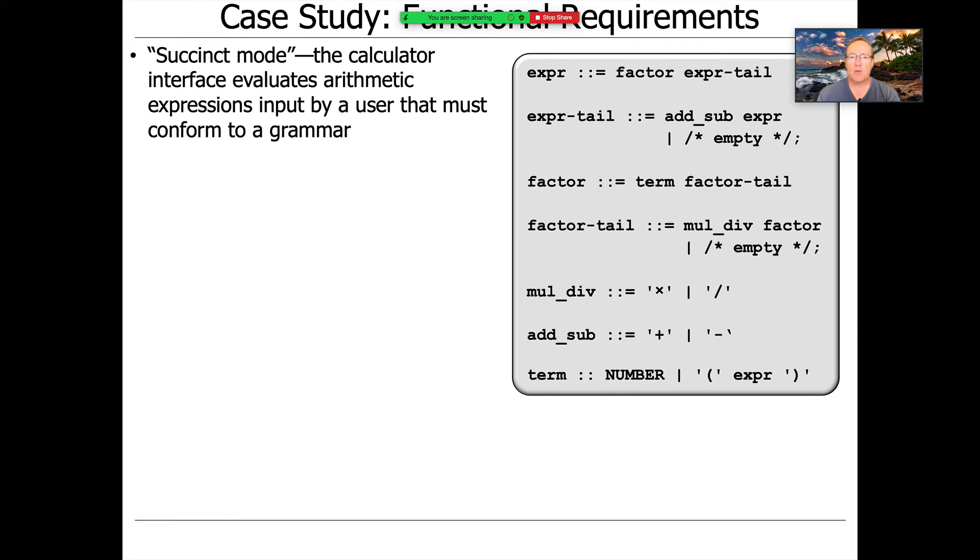So the functional requirements for our program is to have it operate into two modes. One mode is the so-called succinct mode. And in that mode, it's basically just like a calculator where you give it some input expression and it gives you a result. And of course, the input expression that you give it has to match the grammar of arithmetic expressions.